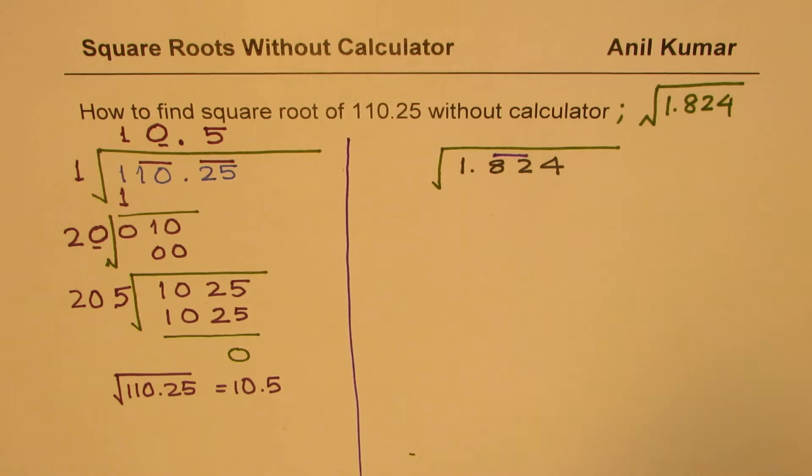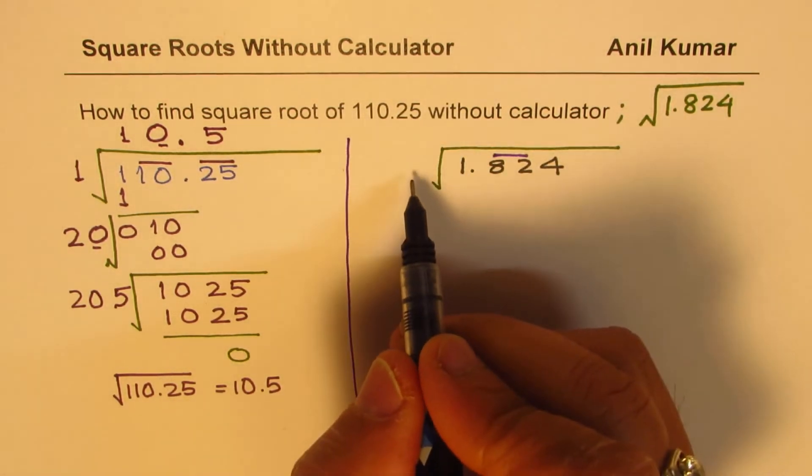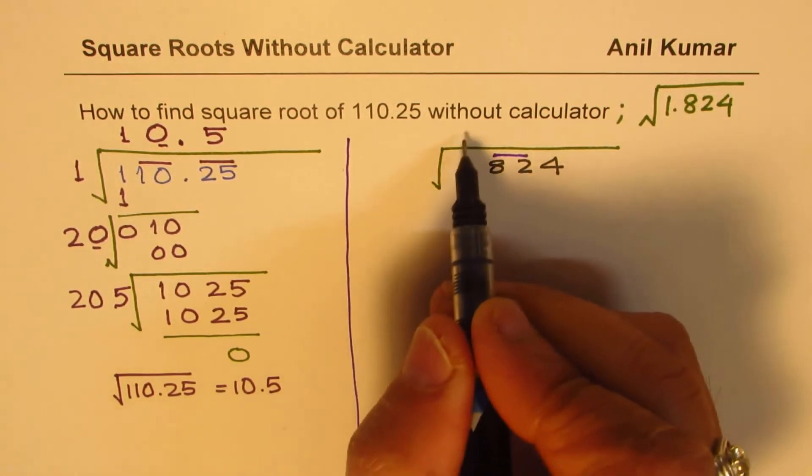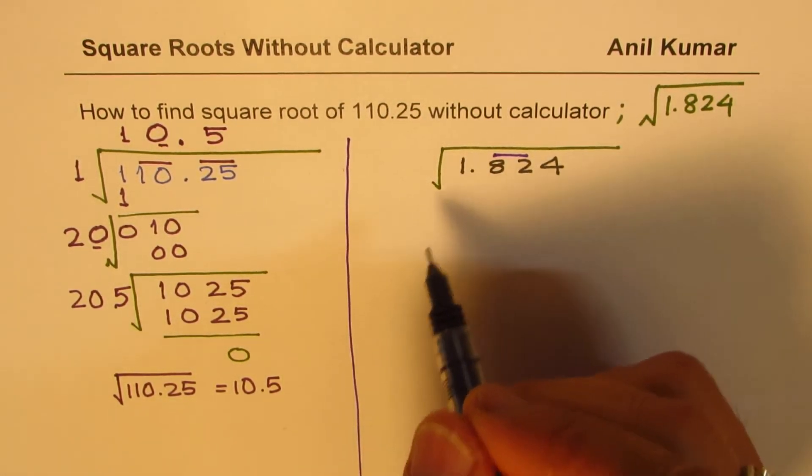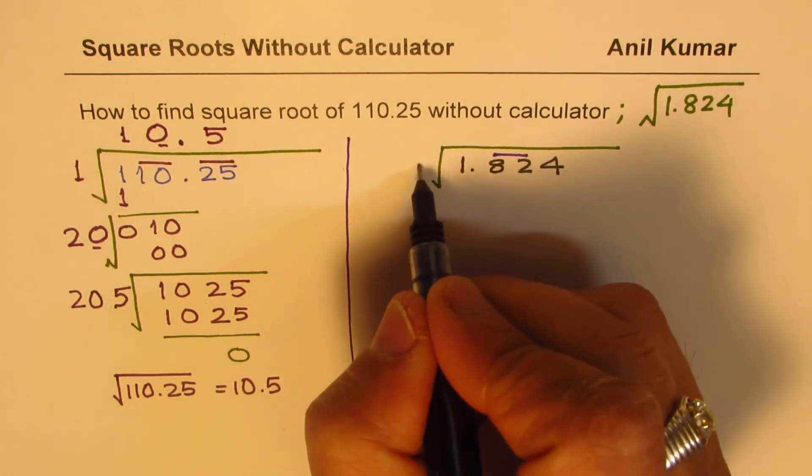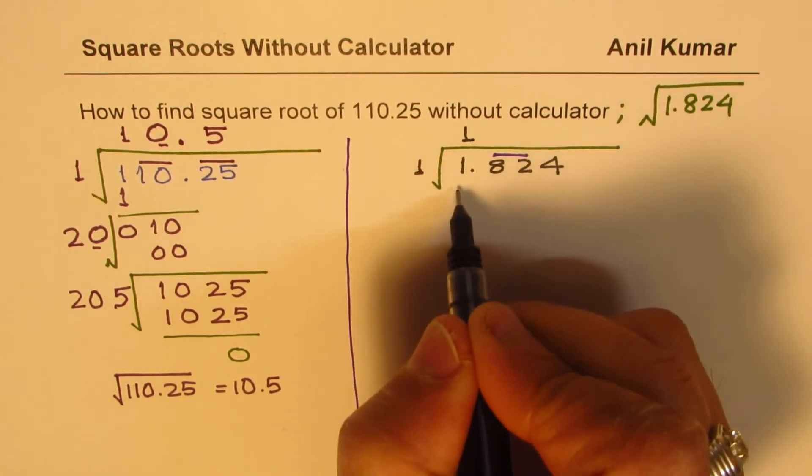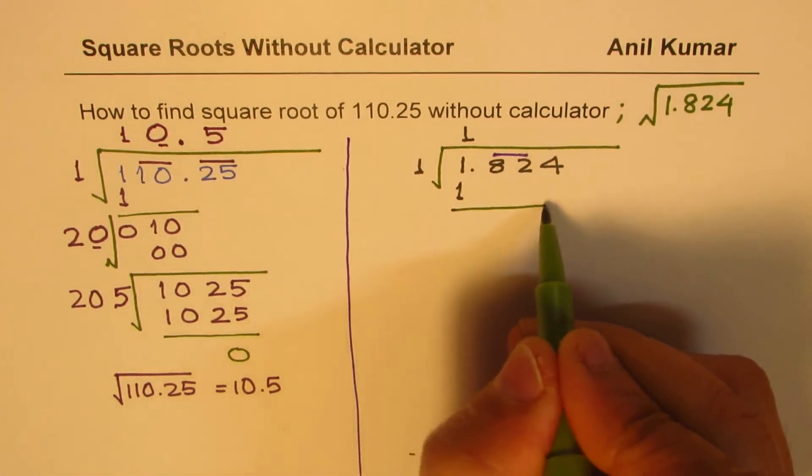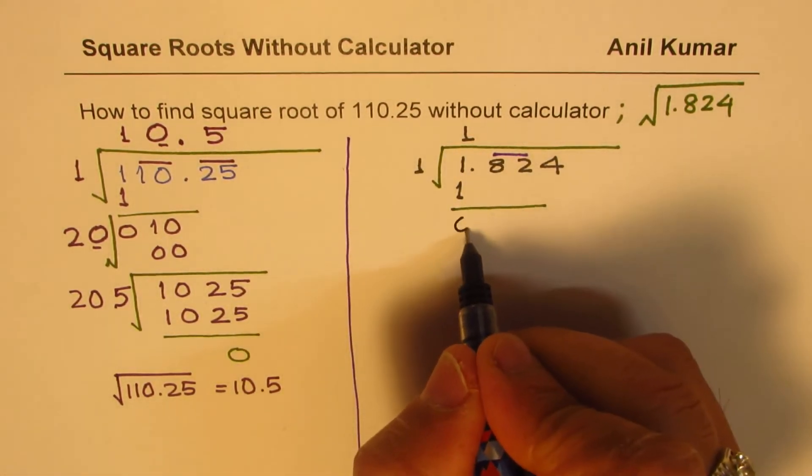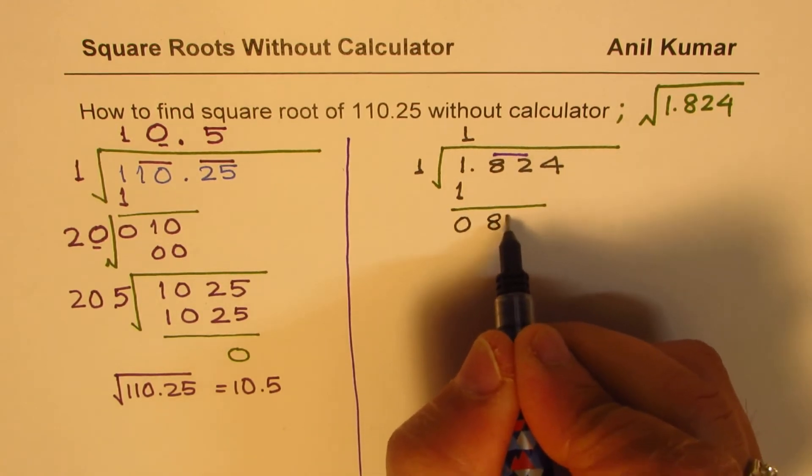Then when we divide, we have to divide putting the divisor and the quotient, same number. It is square root. So it is like 2 square is 4, 3 square is 9. So we are working with the same number. So 1 comes in both the places, take away 1 from 1, you get 0, bring down 82.